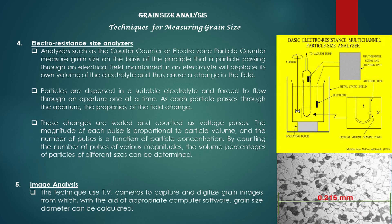Electro-resistant size analyzers, such as the Coulter counter or electrozone particle counter, measure grain size on the basis of the principle that a particle passing through an electrical field maintained in an electrolyte will displace its own volume of the electrolyte, and thus cause a change in the field. Particles are dispersed in a suitable electrolyte and forced to flow through an aperture one at a time. As each particle passes through, the properties of the field change. These changes are scaled and counted as voltage pulses. The magnitude of each pulse is proportional to particle volume, and the number of pulses is a function of particle concentration.